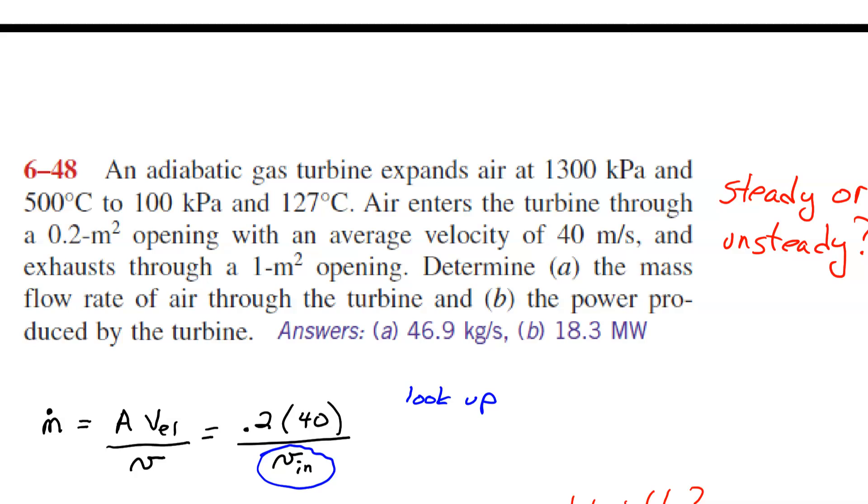So I'm using the equation that I hope is normal for you by now. It's density times area times velocity. Density is 1 over little v, so it's area times velocity over little v. What I'm hoping is that I can look this thing that's circled in blue up because I'm given the inlet conditions. So I'm hoping I can look that up or somehow calculate it.